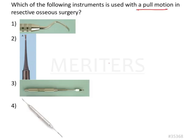As we know, resective osseous surgery means you are removing bone. Regenerative is you are adding bone to restore normal architecture. In resective, you are trying to remove the bone in order to restore the normal architecture of bone.